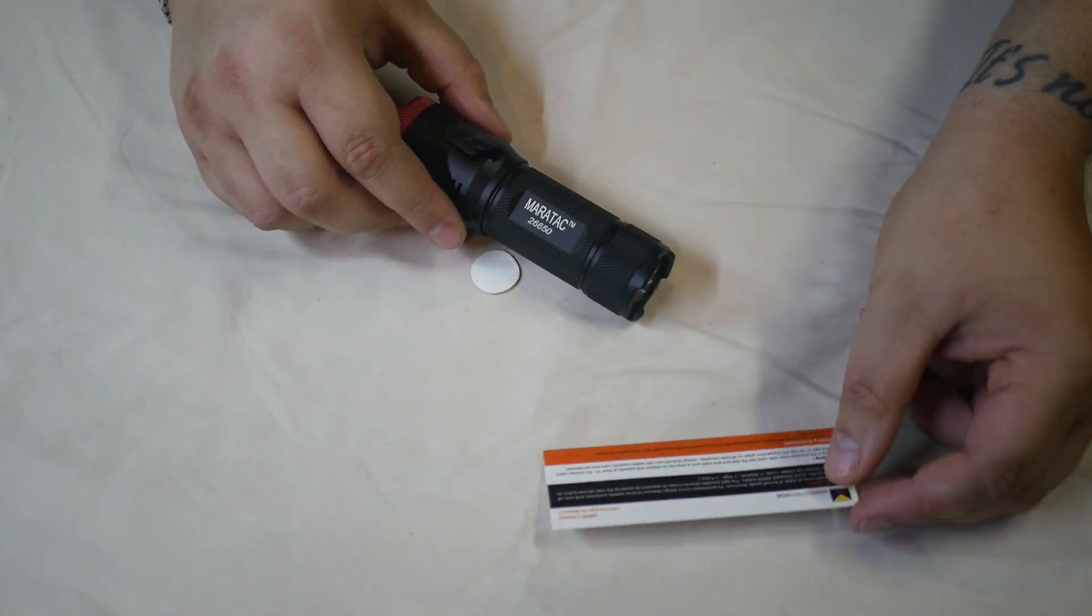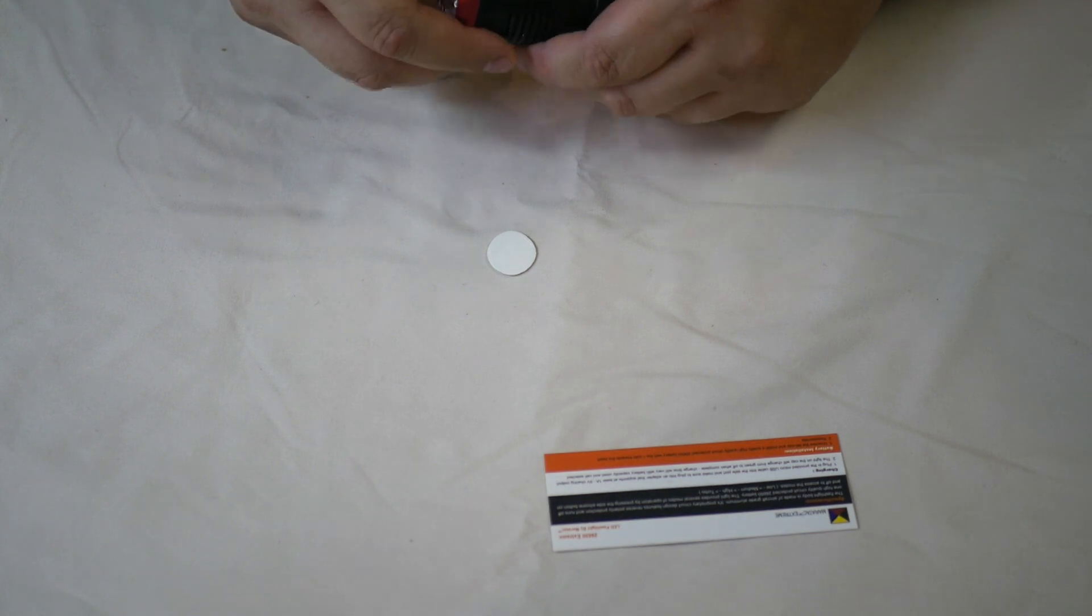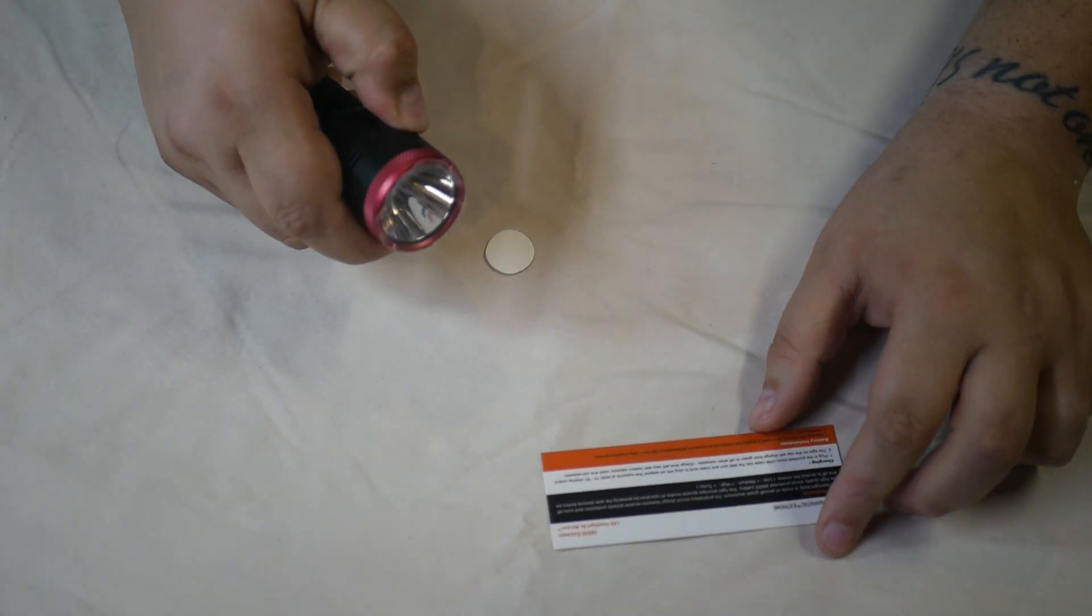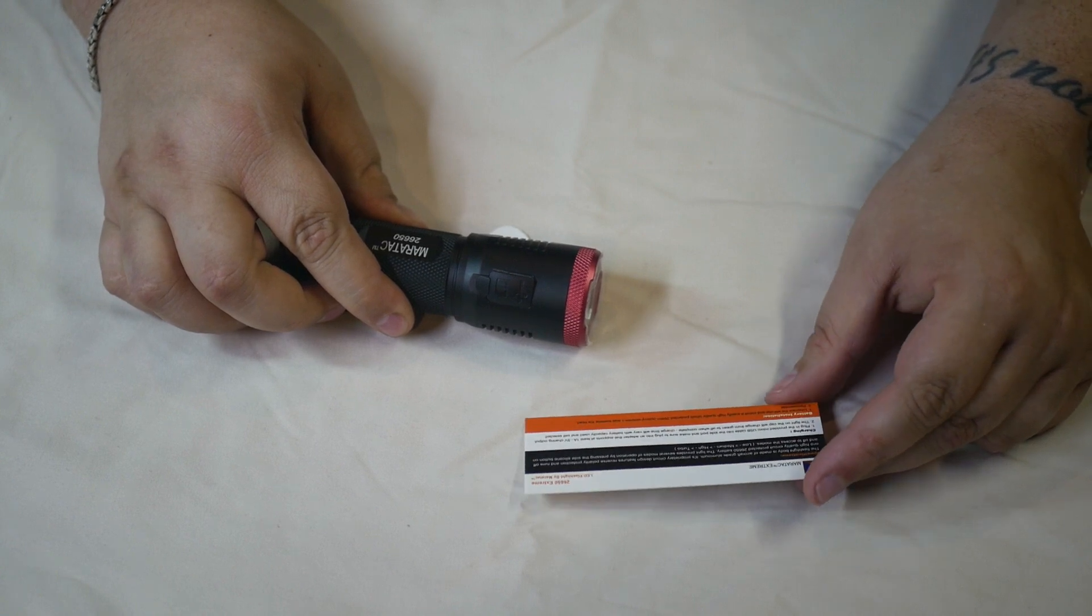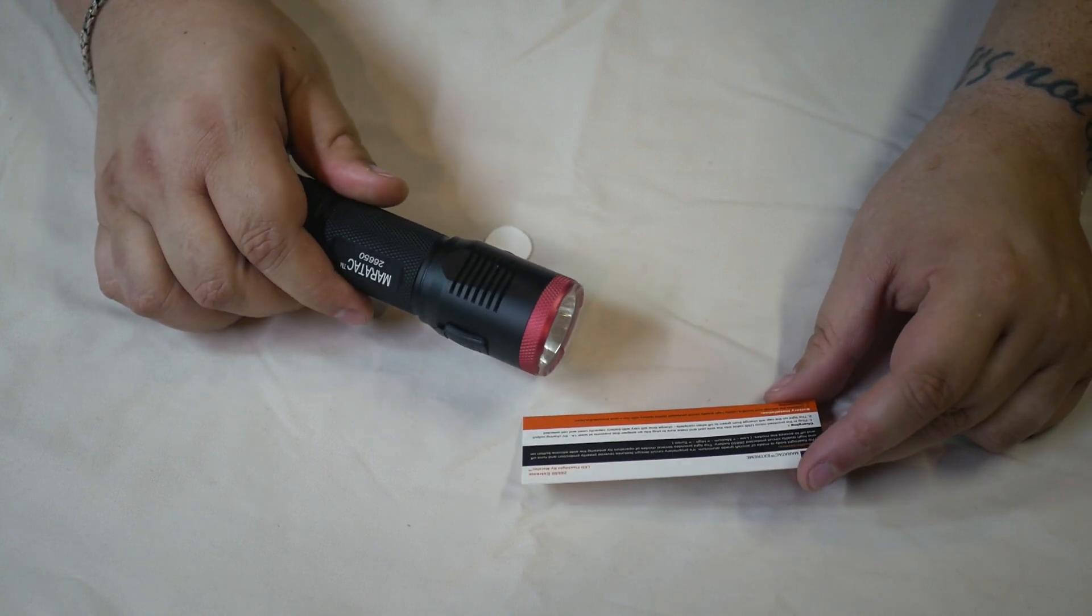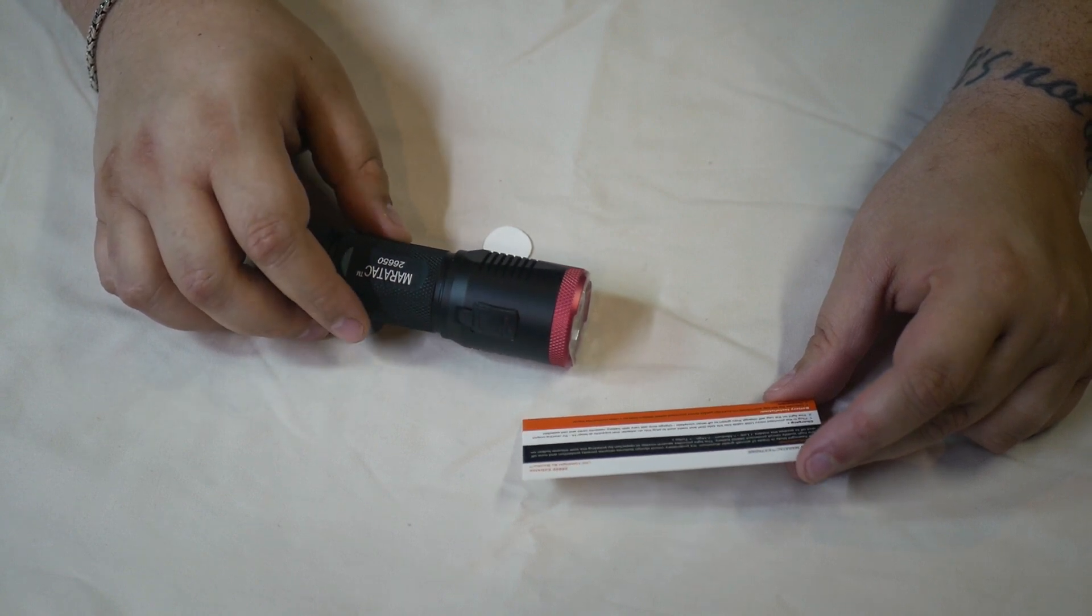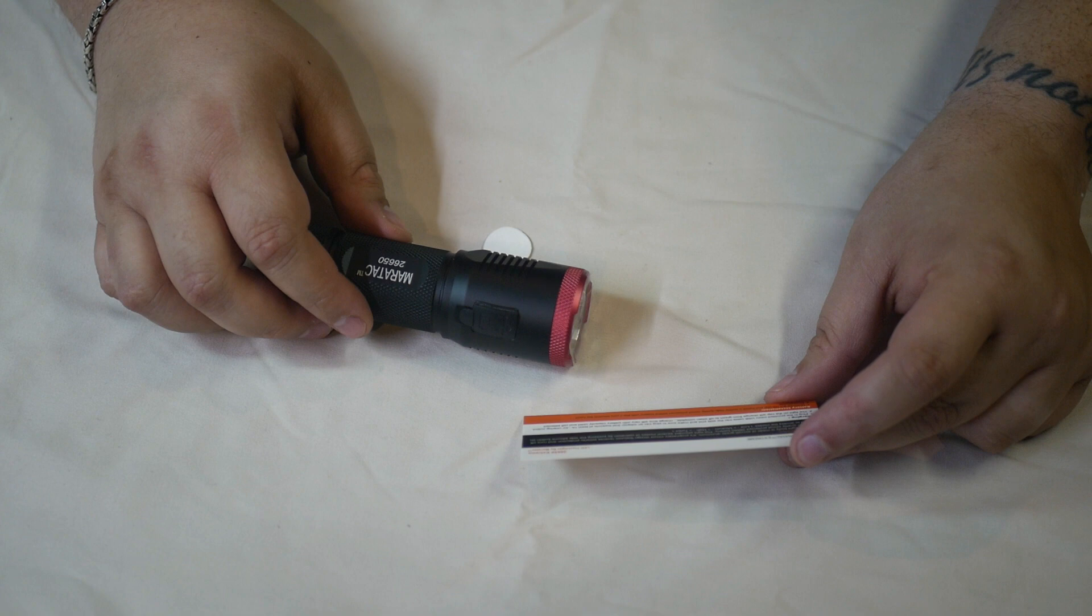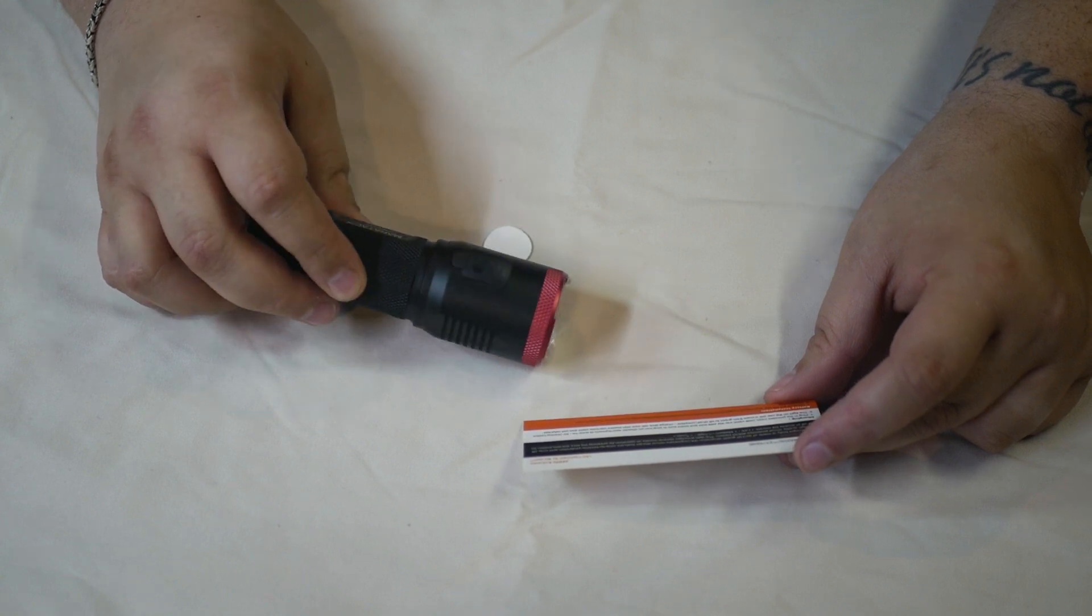Now I believe the specs on this guy are - its maximum is I believe 2020 lumens is what they claim. And it's got a four-setting switch: low, medium, high, and turbo. And it says charging here - you plug it into the port and adapter. Okay, so you need at least a one amp five volt charging cube, which I think everybody has one if they have a cell phone.